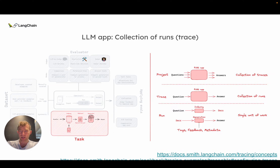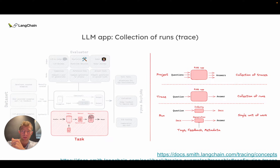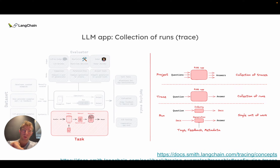A project is just a collection of traces for a given app. Let's say I had this RAG app in production — a bunch of users used it. All those traces would be logged to that particular project. So I have an app, it's a RAG app with two steps, each step is a run, going from input to output is a trace, and every time I run that app, all those traces get rolled into a project.